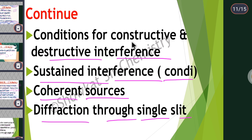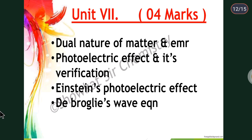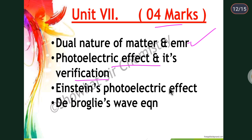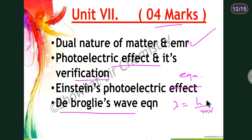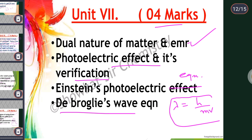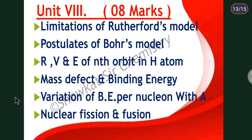Unit 7 carries only 4 marks and covers the dual nature of matter and electromagnetic radiation. The photoelectric effect and its verification are very important here, along with Einstein's photoelectric equation. Also study de Broglie's wave equation: λ = h/mv, including its derivation in terms of energy.